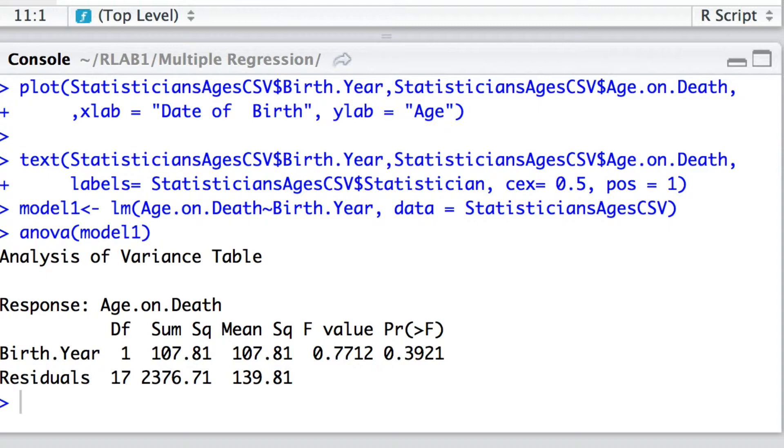And what we can see here is that there is no evidence to reject the null hypothesis that age and birth year are entirely independent of one another. We can't reject the null hypothesis that the population level coefficient is zero because we have a relatively high value of significance probability.